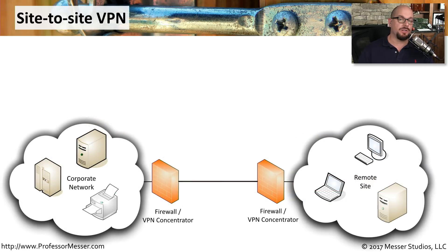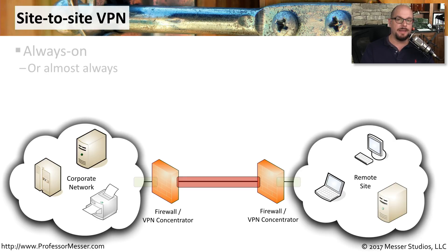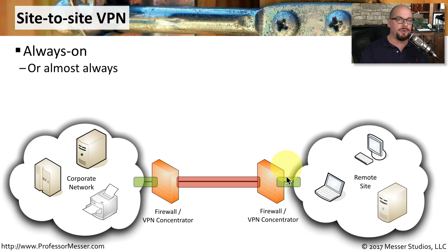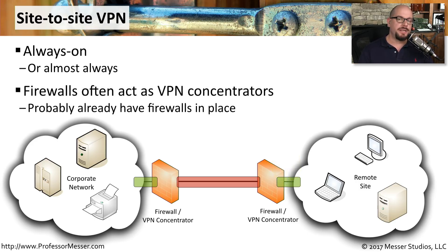If you're part of a company with a large corporate office and many remote sites, there may already be a VPN configured between firewalls at the corporate office and at your remote site. Most site-to-site VPNs are always-on, meaning traffic always goes through the encrypted tunnel. Some are configured to disable the tunnel after a period of non-use, but as soon as you try to send traffic to the corporate network, it will rebuild the tunnel and send that traffic over the encrypted connection. In most cases, organizations use existing firewalls as VPN concentrators, so no separate device is needed at remote locations.